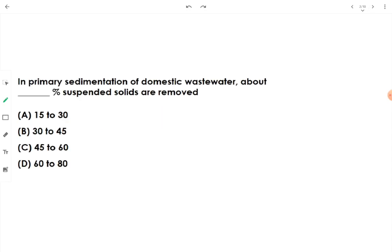The question in front of us is saying, in primary sedimentation of domestic wastewater, about fill in the blank percent of suspended solids are removed. The answer is 45 to 60 percent of suspended solids are removed in PST, that is primary settling tank or primary sedimentation of domestic wastewater.